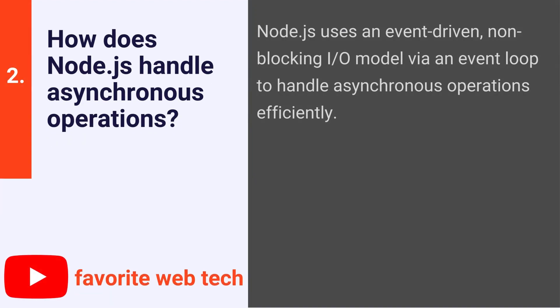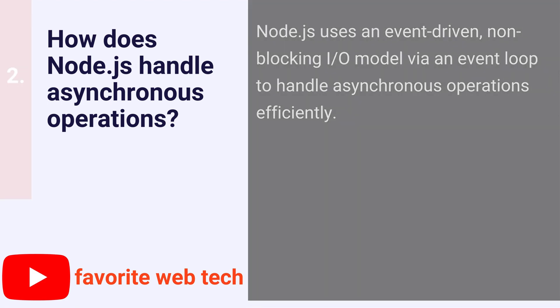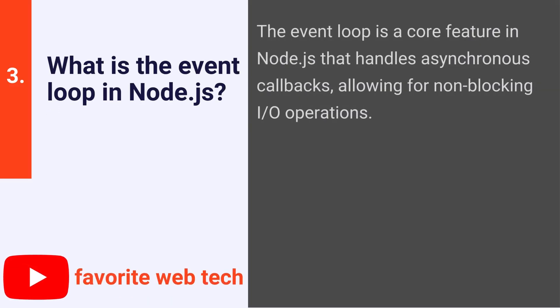How does Node.js handle asynchronous operations? Node.js uses an event-driven, non-blocking I/O model via an event loop to handle asynchronous operations efficiently. What is the event loop in Node.js? The event loop is a core feature in Node.js that handles asynchronous callbacks, allowing for non-blocking I/O operations.